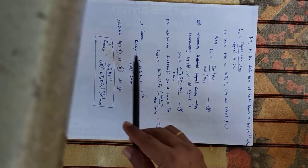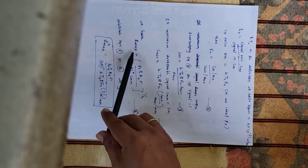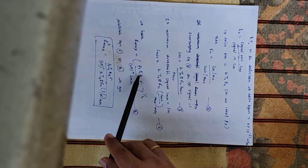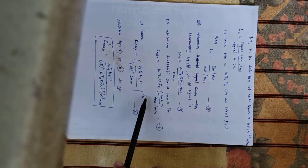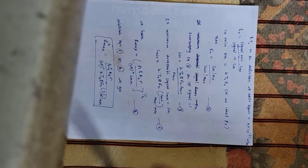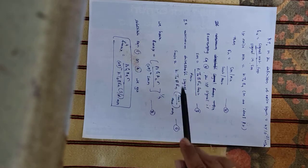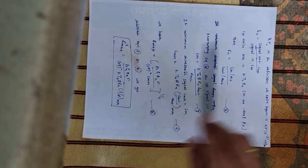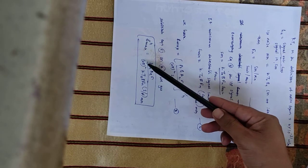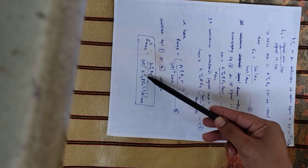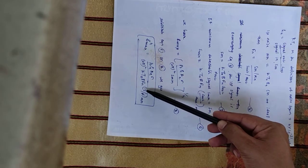We have the simple radar range equation from the previous chapter: Rmax = [Pt·G·Ae·σ / (4π²·Smin)]^(1/4). Substituting the value of Smin from equation 6 into this equation gives: Rmax = [Pt·G·Ae·σ / (4π²·kT0·B·Fn·(S/N)min)]^(1/4).